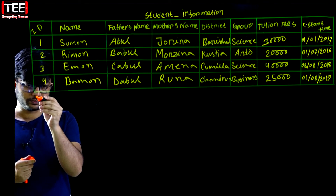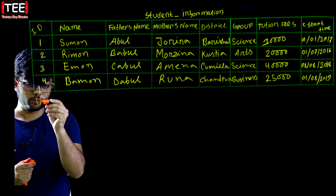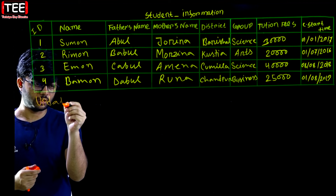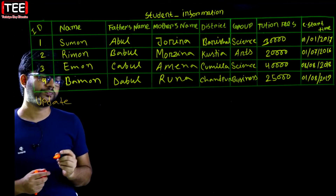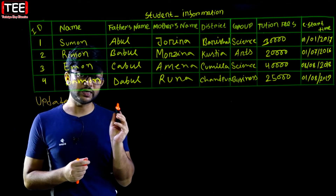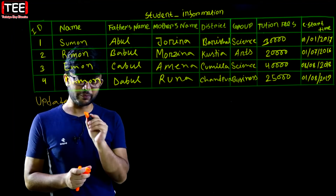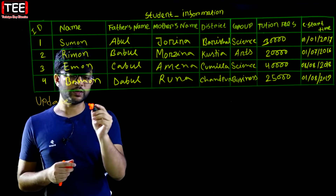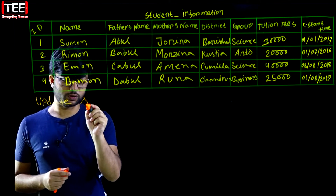Update. The next class — the next class is a table name. The next class is student information.